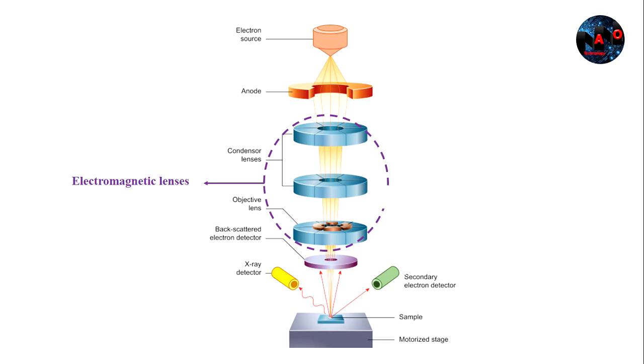Electromagnetic lenses, which are composed of condenser lenses and objective lens, are used to focus the electrons into a beam, adjust beam astigmatism, move the beam across the specimen, and to scan the beam to generate images.